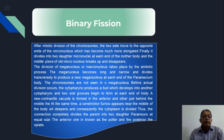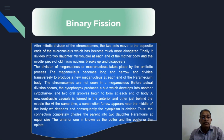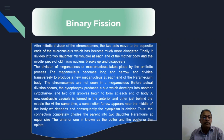The meganucleus simply elongates, narrows down, and divides transversely to produce a new meganucleus at both ends of the Paramecium body. The cytopharynx is budded off and develops at both the anterior and posterior ends, giving two cytopharynges. New contractile vacuoles form at the anterior and posterior ends. A constriction furrow develops at the midpoint of the animal body, deepens, and the cytoplasm is divided completely — separating the parent into two daughter Paramecia of equal size. The anterior part is known as the proter and the posterior part as the opisthe.